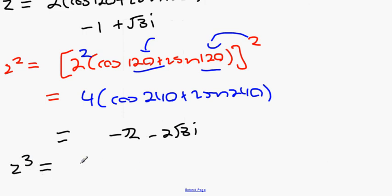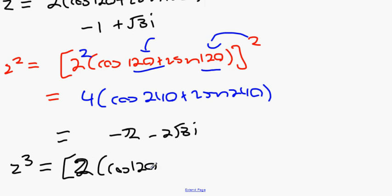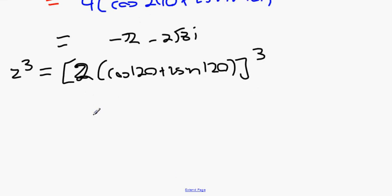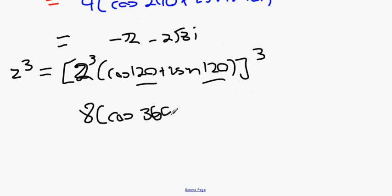And finally, Z cubed equals (2(cos 120 + i·sin 120)) to the power of 3. Using De Moivre's theorem, 2 cubed is 8, and multiplying 3 by the angle gives cos 360 plus i·sin 360. So we get 8 plus 0i.